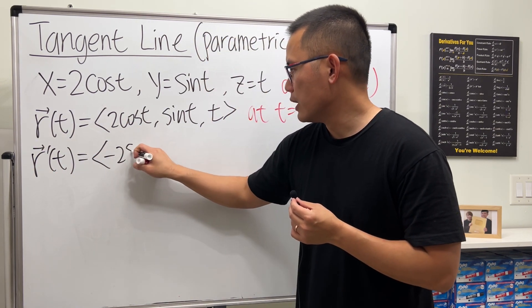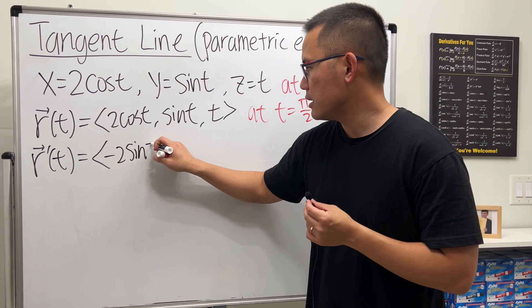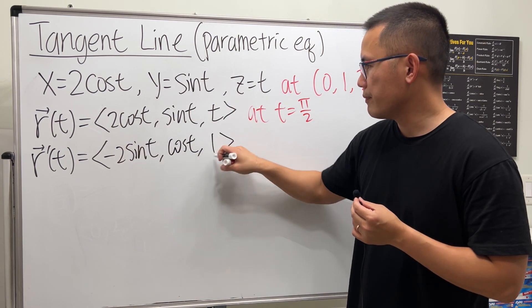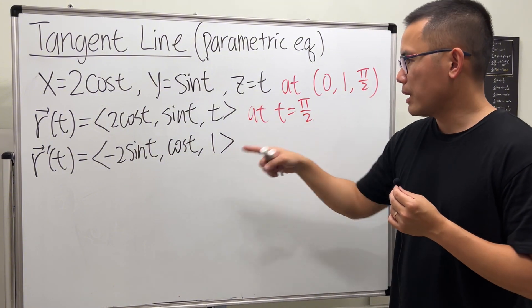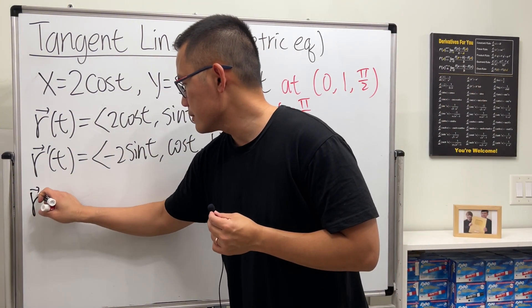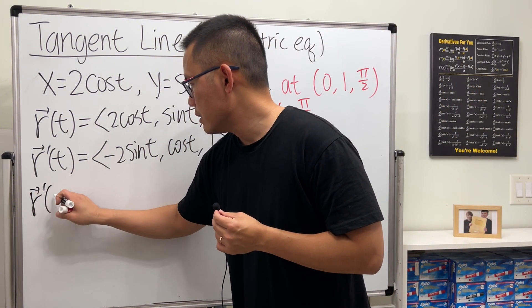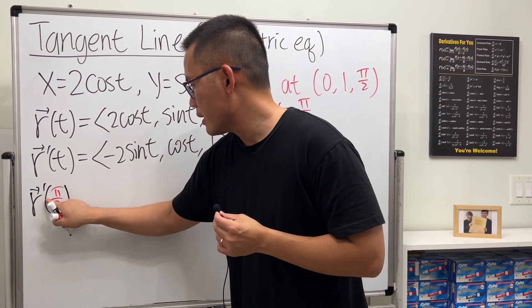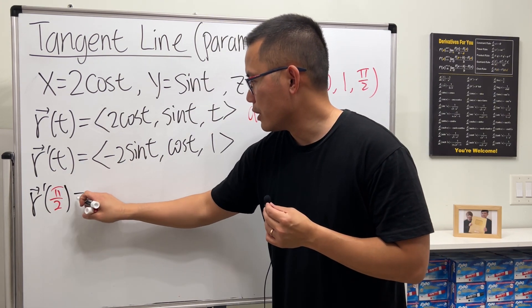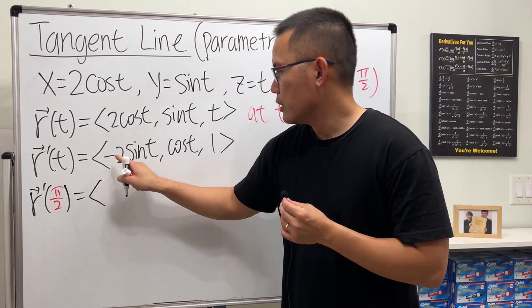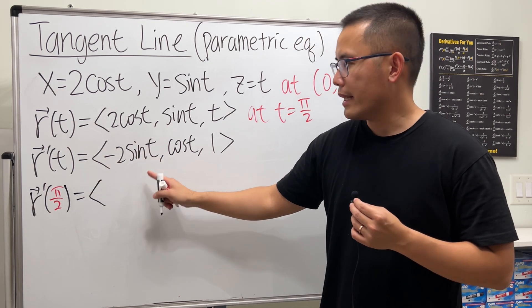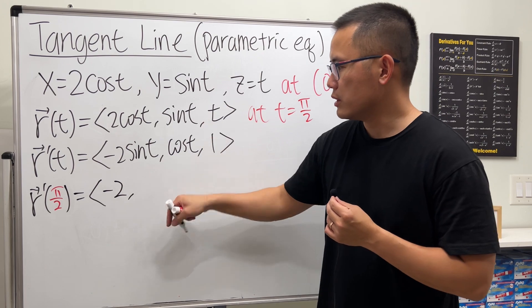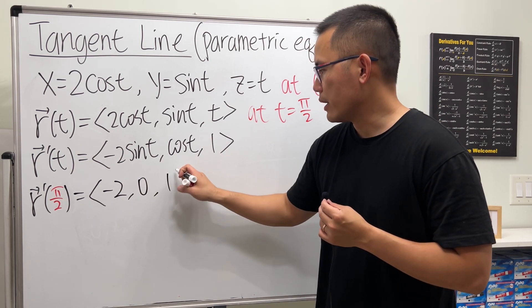Differentiating R of T gives us negative 2 sine T for the X component, cosine T for the Y component, and 1 for the Z component. Next, plug in π over 2. R prime of π over 2: sine of π over 2 is 1, so we get negative 2; cosine of π over 2 is 0; and the Z component is just 1.